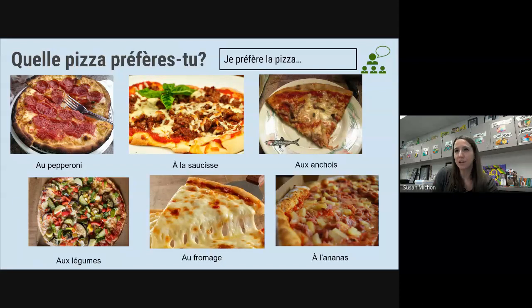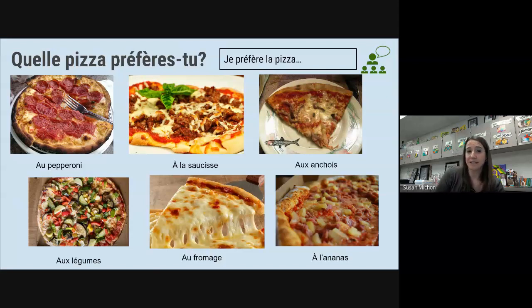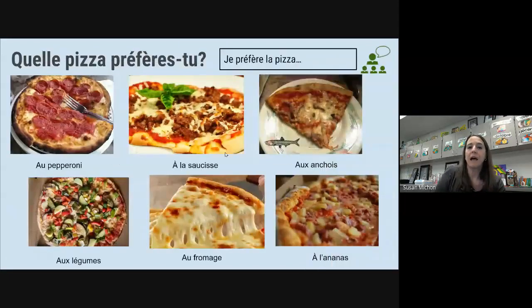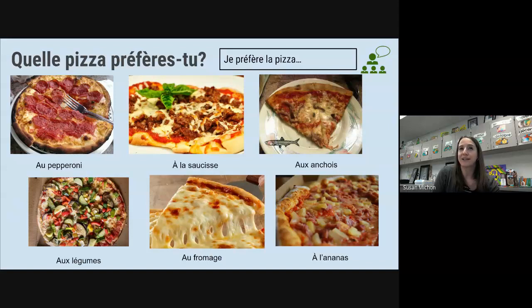Okay, Carson, you're going to start. You're going to ask the question: quelle pizza préfères-tu? And Valentina, you're going to answer: je préfère la pizza au pepperoni, je préfère la pizza à la saucisse, etc. Then Valentina, you're going to throw the question back to Carson: quelle pizza préfères-tu, and Carson will tell us his preference.